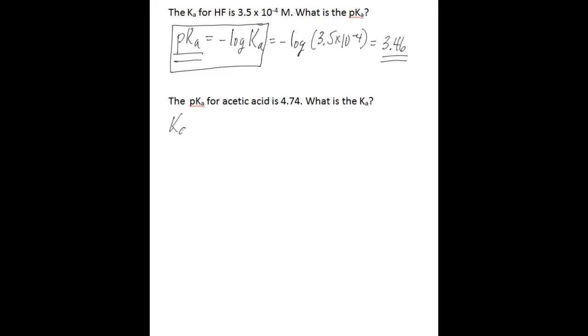So to do that, you're going to say that Ka is equal to 10 to the negative pKa. So you're given the pKa, so you say 10 to the negative 4.74, and when you do the math there, you get 1.82 times 10 to the negative 5. So that is your Ka value for acetic acid.